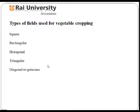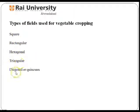What, if any, are the size of the market window for these crops? What are the risks associated with the production of these crops? Now let us see the different types of field used for vegetable cropping. Under this we have square field, rectangular field, hexagonal, triangle, and diagonal.